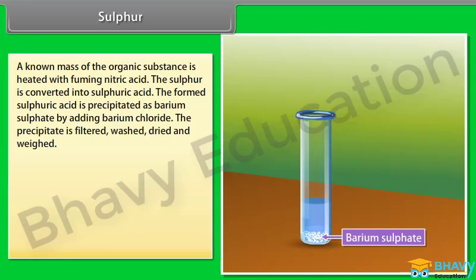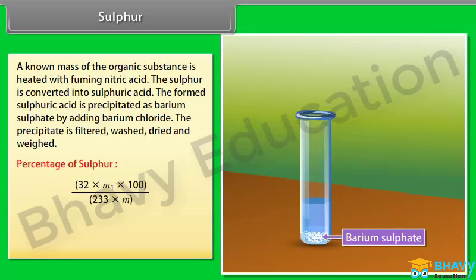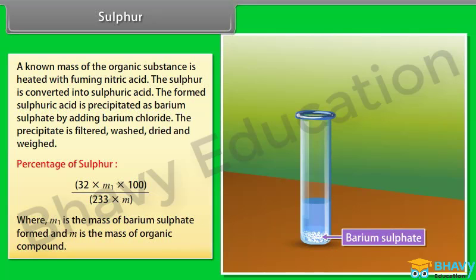Percentage of sulfur: 32 × M₁ × 100 ÷ (233 × M), where M₁ is the mass of barium sulphate formed and M is the mass of the organic compound.